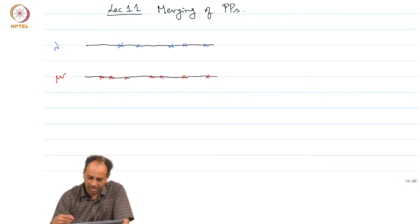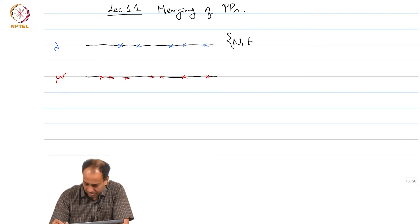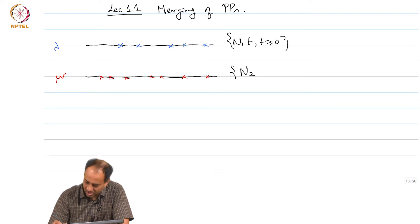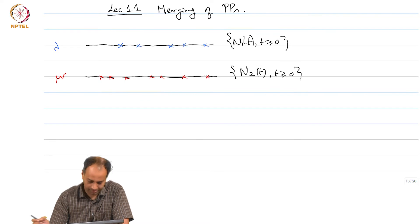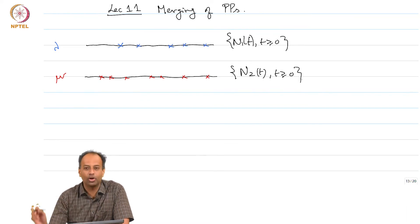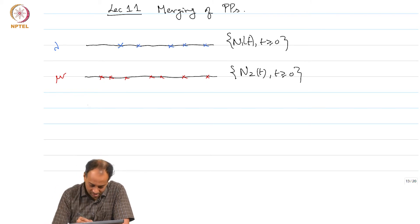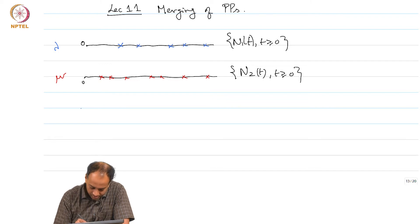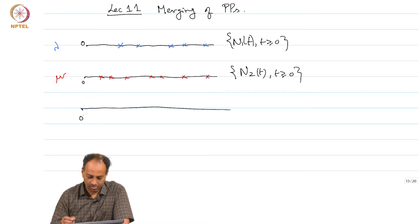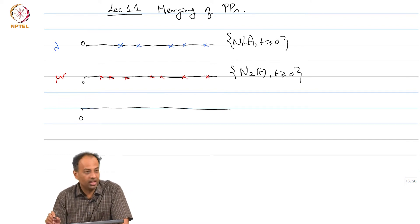Let us call the counting process for the blue process n1(t) and for the red process n2(t). Merging means I want to merge the 2 processes. Time starts at 0, and I want to look at what happens when we merge them.